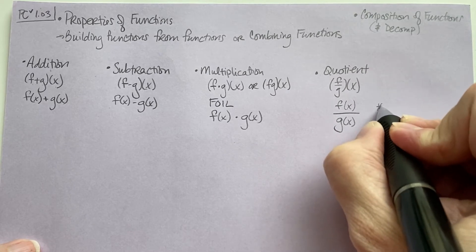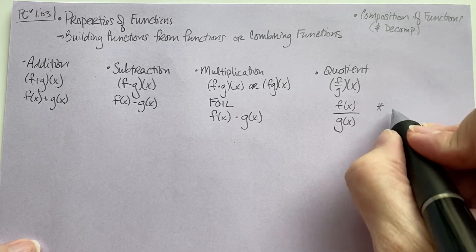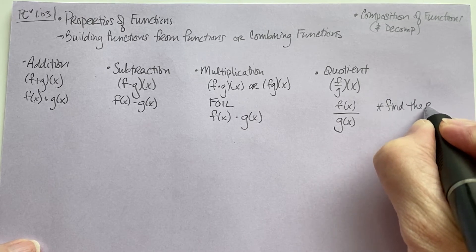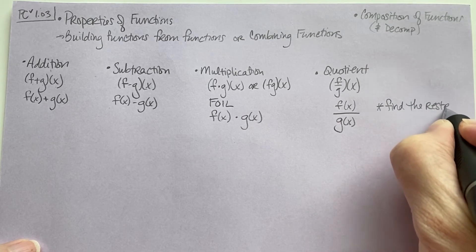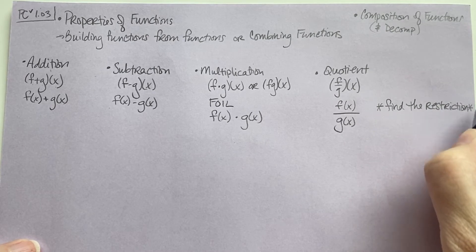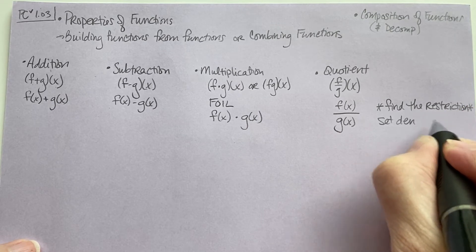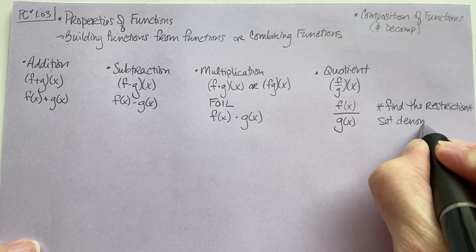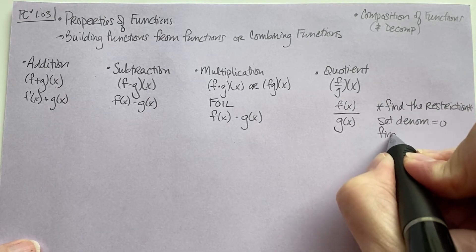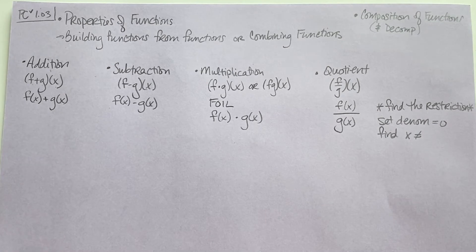With division, you do have to take one extra step. You need to find the restriction of the function, which basically means you set the denominator equal to zero and find what x cannot equal. We'll do a couple of examples of that.